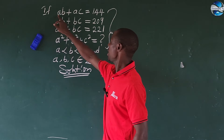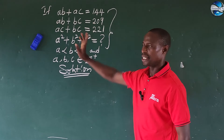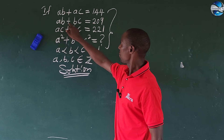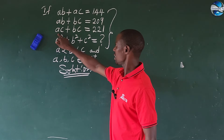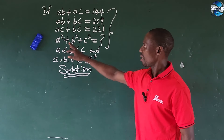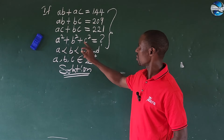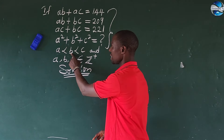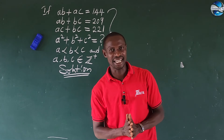The question reads: if AB plus AC equals 144 — that's equation 1 — and equation 2, AB plus BC equals 209, then equation 3, AC plus BC equals 221. What then would be the value of A squared plus B squared plus C squared? We are given that A is less than B, B less than C, and A, B, C are positive integers.